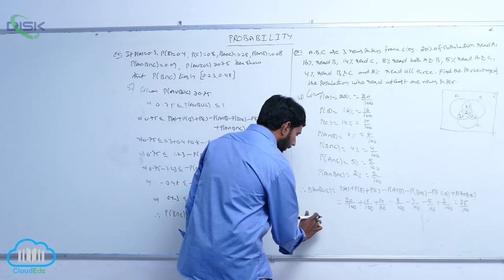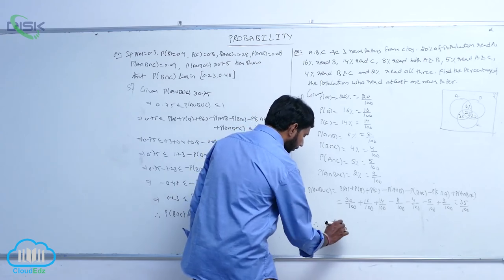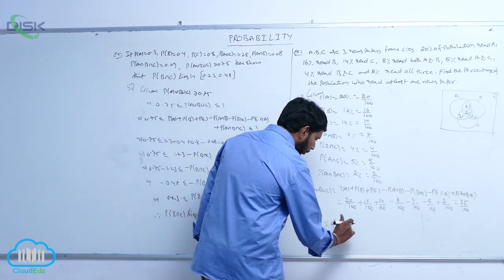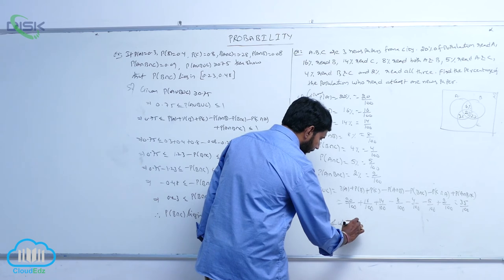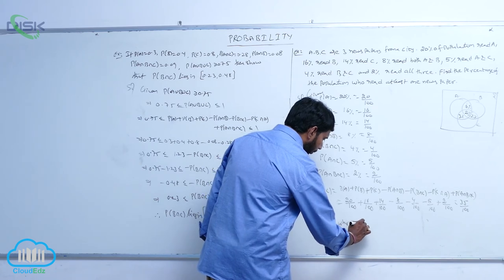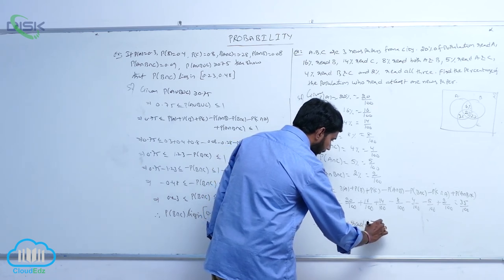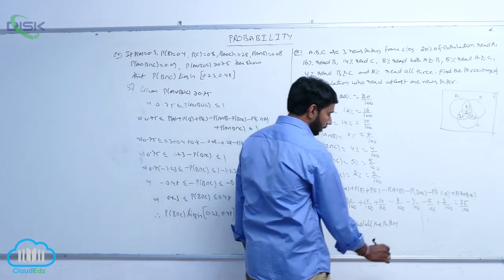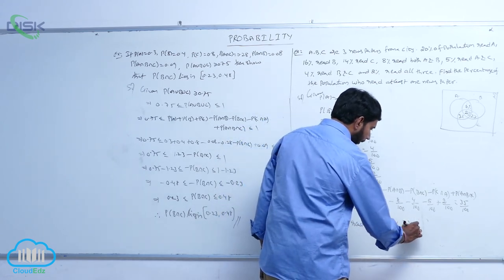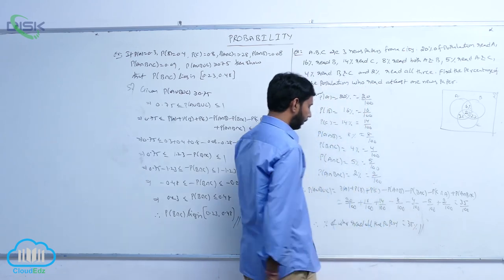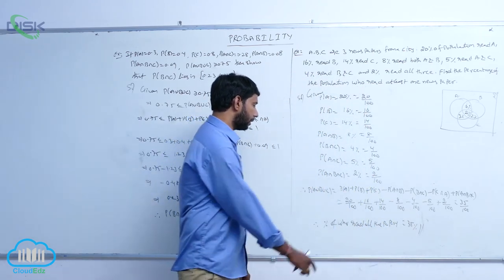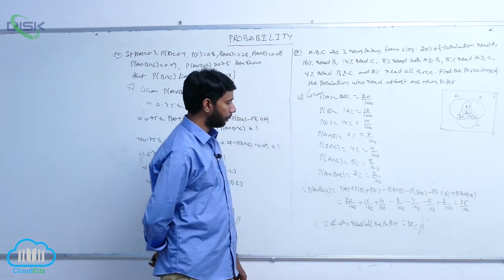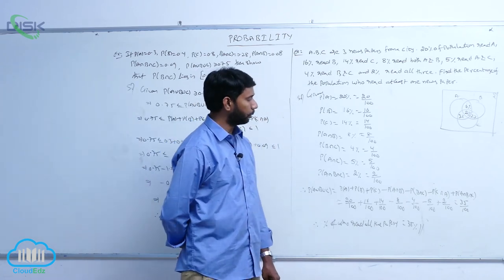Therefore, the percentage of the population who read at least one newspaper is equal to 35 percent.